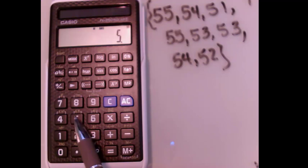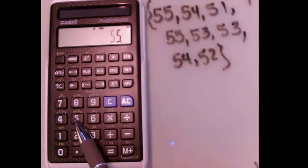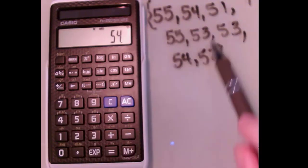So I'm going to hit 55, my first one, and I'm going to hit the data button. And then let's do the 54. So every time I enter one of the data sets, I hit the M plus or the data symbol. So then 55 and 53.